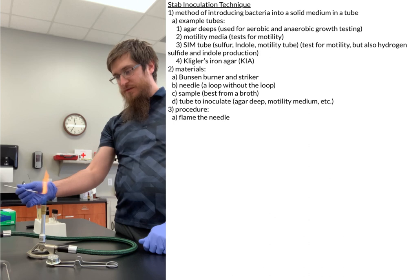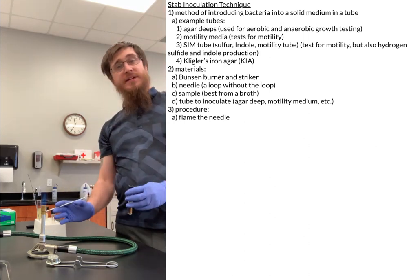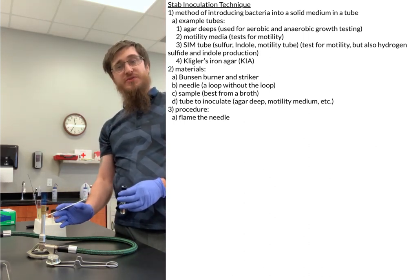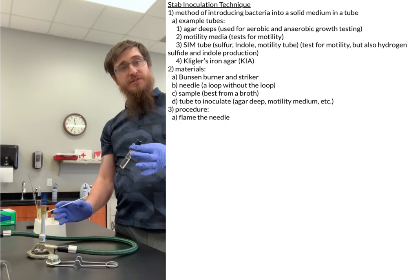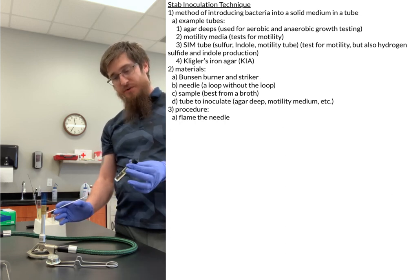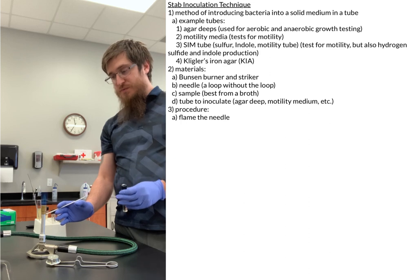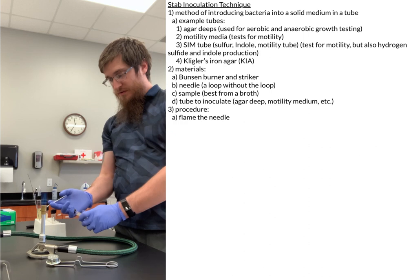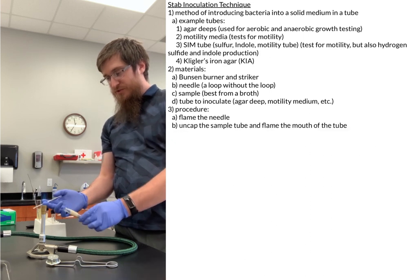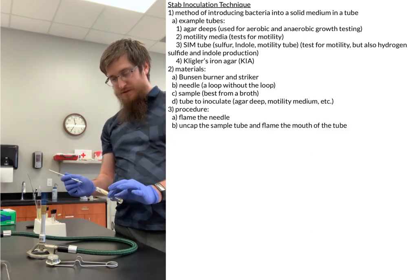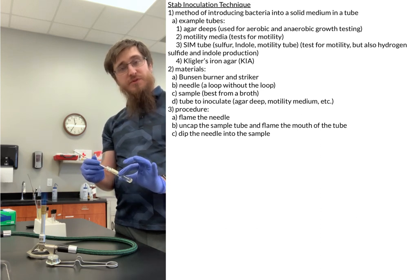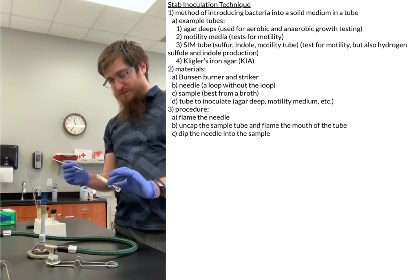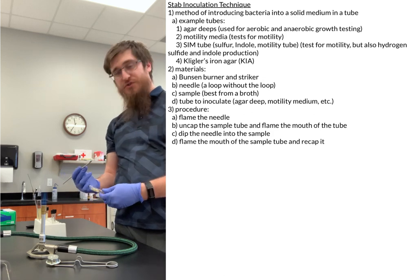We're going to flame our needle — make sure you flame the entire needle. Now we're going to give it about 10 to 15 seconds or so to cool down, so that we're not creating aerosols and we're not killing off the bacteria inside of our tube. Then uncap the sample tube, flame the mouth of it, dip your needle inside of it and swirl it around, flame the mouth of the tube again, and recap it.